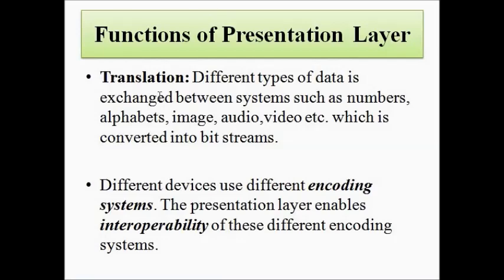For example, a device with operating system 1 has to communicate with a device with operating system 2, or a device with an upgraded operating system and upgraded features has to communicate with a device with old technology. In that case, translation comes into play, which is done by the presentation layer. It allows different devices with different features, operating systems, or upgraded features to communicate with one another — it allows interoperability of various computer systems.